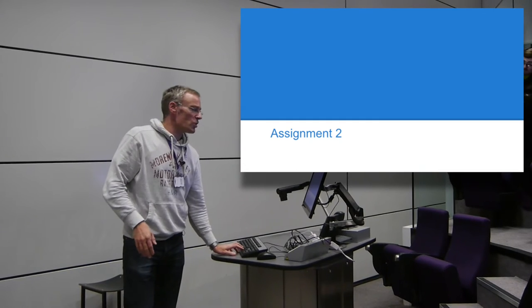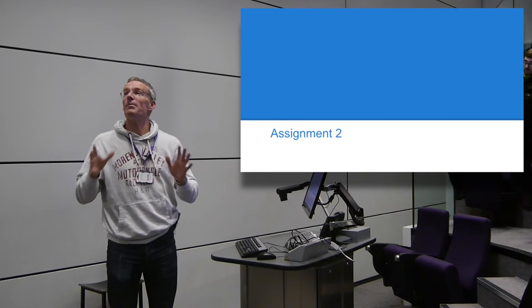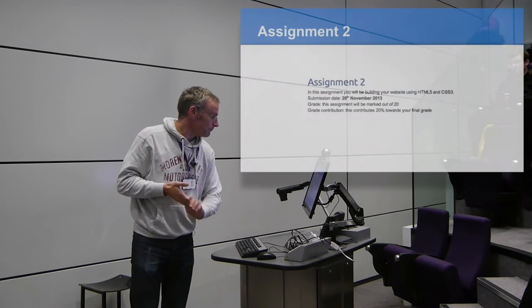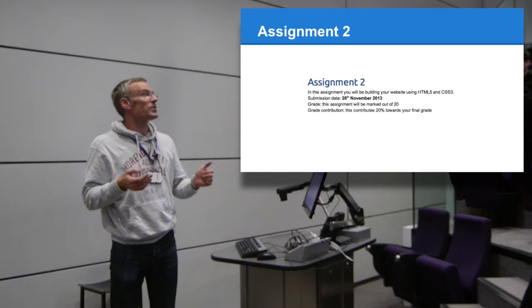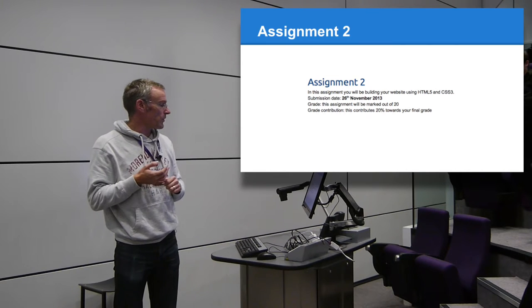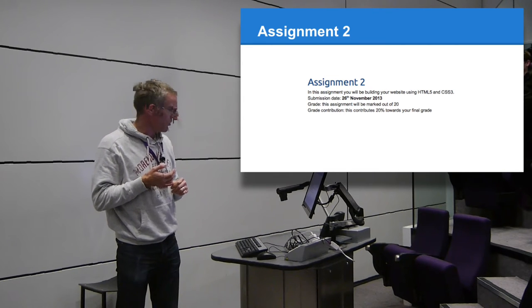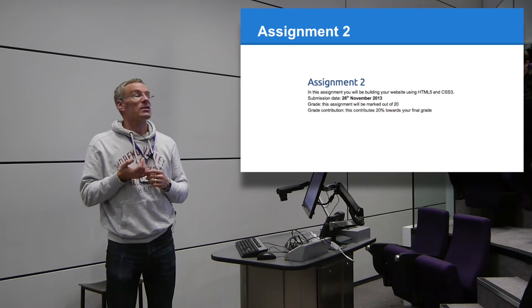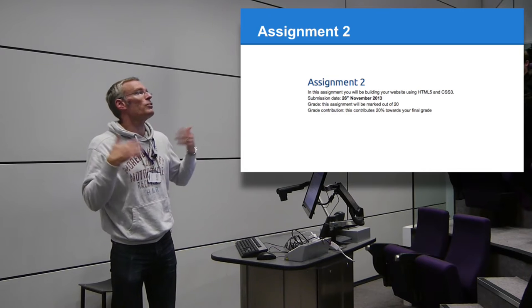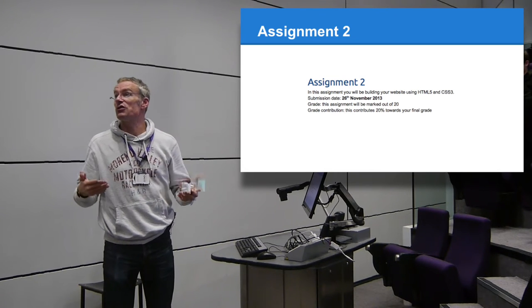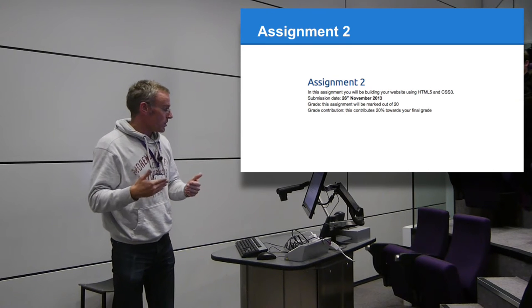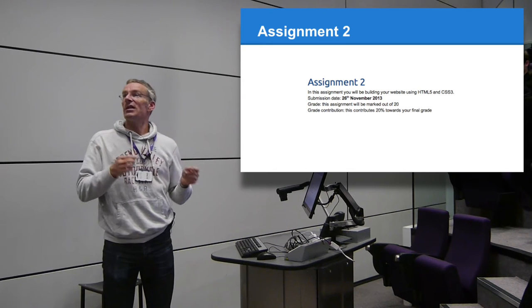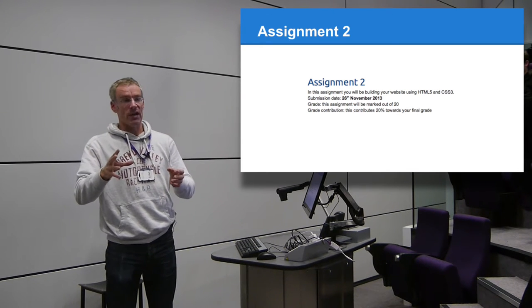Assignment two - I'm going to break it down bit by bit on the slides so you've got a reference to look through. You're going to design and build your website using a range of graphical and code tools. The deadline for this is the 26th of November, so again it's a four week cycle. As long as you do your lab task each week you'll be on schedule for handing this in without a last minute rush.